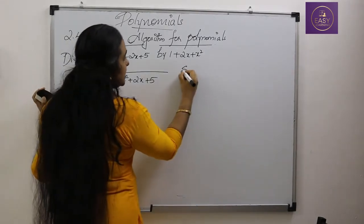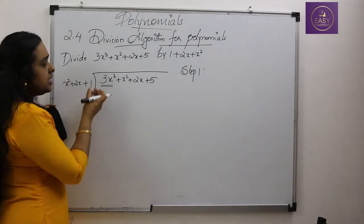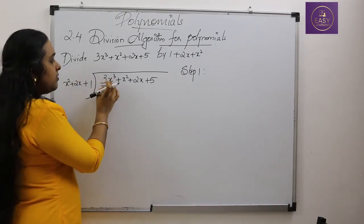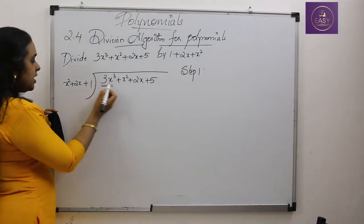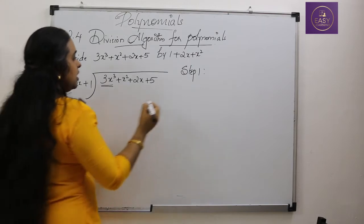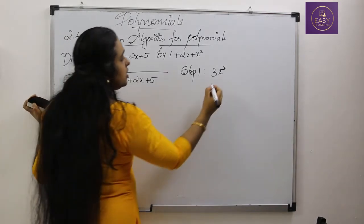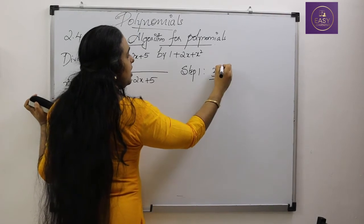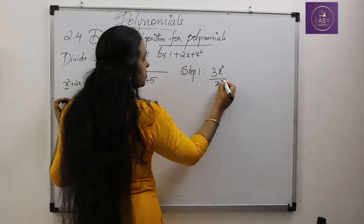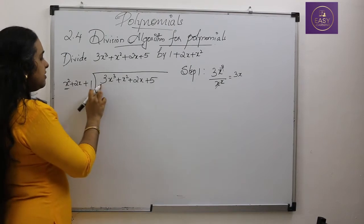Step 1: We have to take the first term — the term with the highest exponent. From the dividend that is 3x³, and from the divisor that is x². We divide the first term of the dividend by the first term of the divisor: 3x³ ÷ x² = 3x. We write 3x as our quotient.